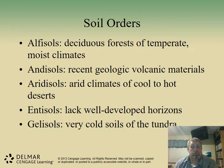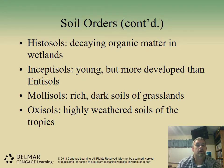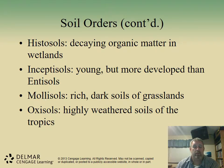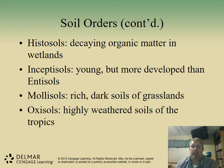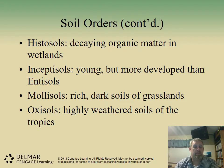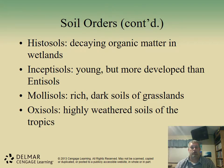Entisols lack well-developed horizons. Gelisols are very cold soils of the tundra. Histisols are soils that contain a lot of decaying organic matter — found in swamplands and wetlands, these are darker and sometimes smellier soils. Inceptisols are young but more developed than Entisols. Young soils lack the O, A, B, C horizon layers, which happens when there is shallow bedrock or constant erosion moving the topsoil away.